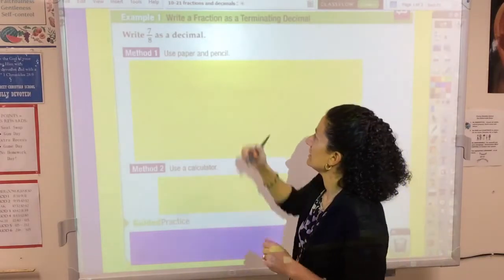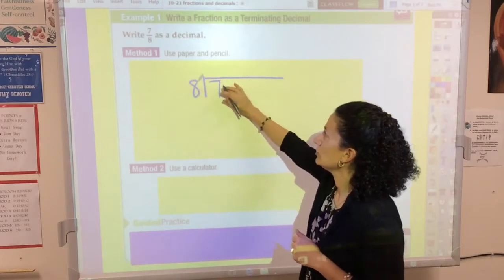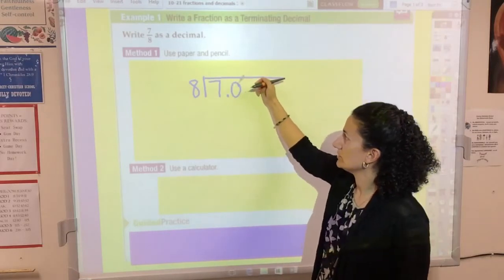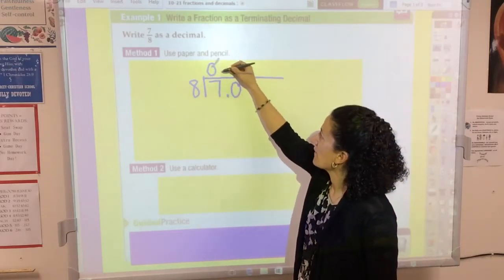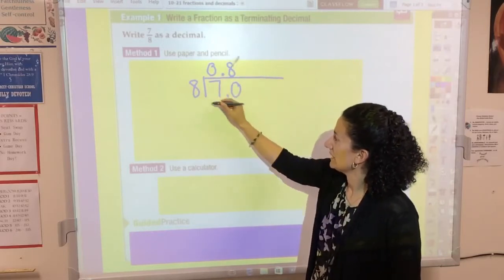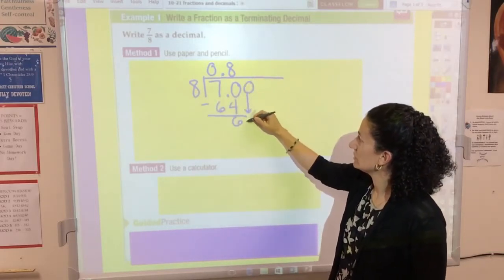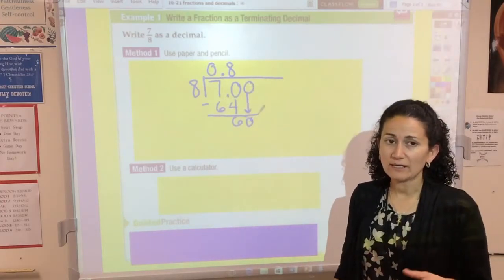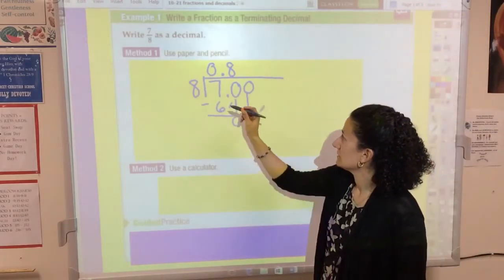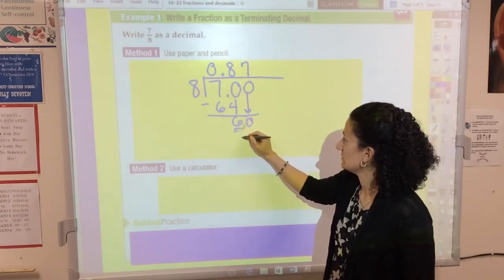Method number one: you would simply divide 7 divided by 8, numerator divided by denominator. Add a decimal point and a zero to begin with because 8 doesn't go into 7. 8 goes into 70 eight times because 8 times 8 is 64. Remainder 6.